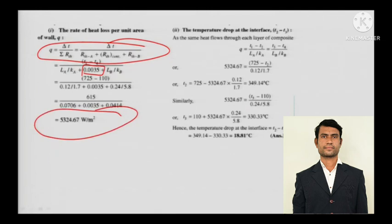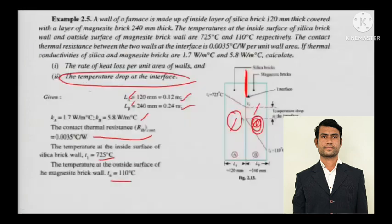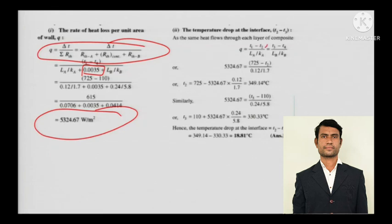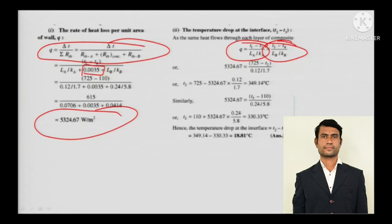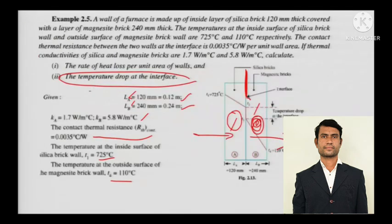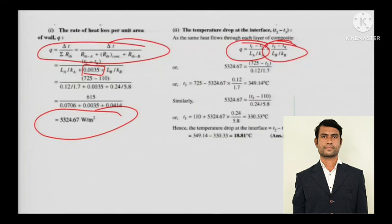For the temperature drop at the interface: since it is steady, the heat coming in will go out with the same magnitude. Using Q = (T1 minus T2) / (LA/KA) and Q = (T3 minus T4) / (LB/KB), everything is known. The contact temperature at the interface can be calculated with simple mathematics.